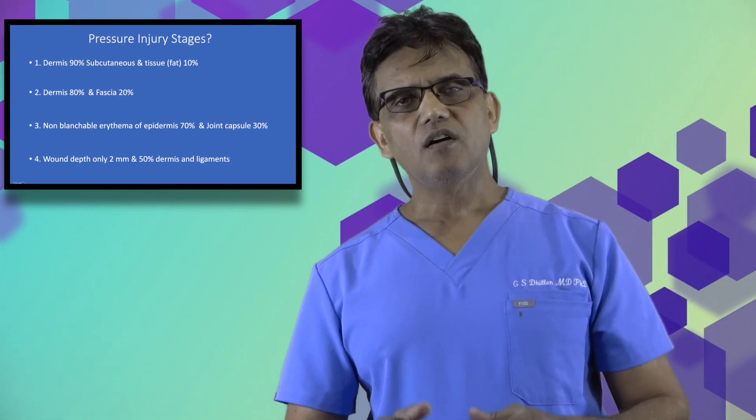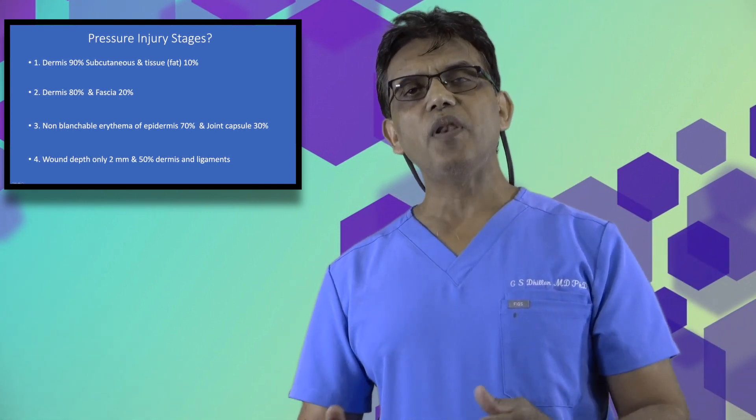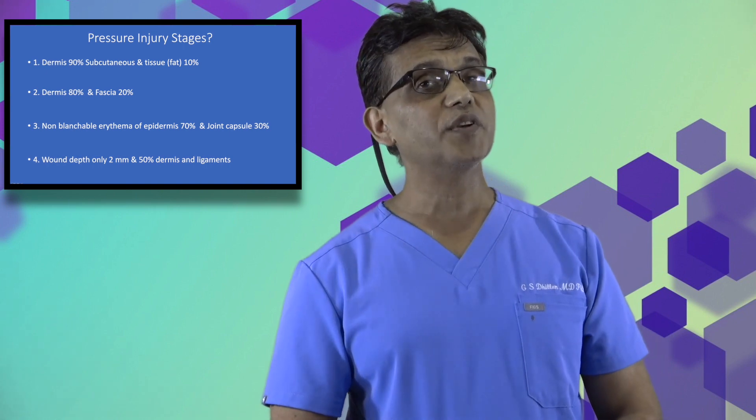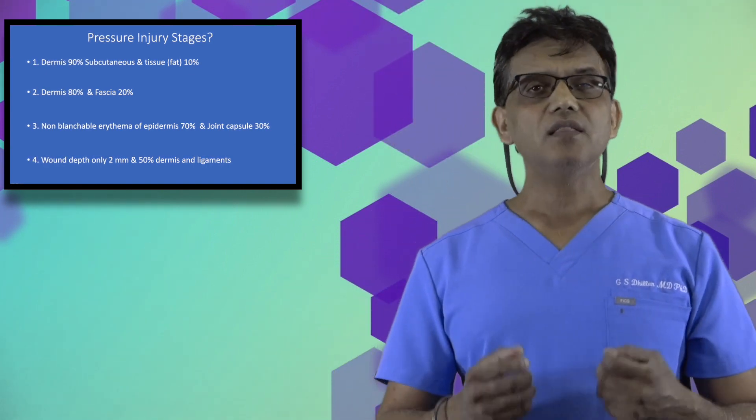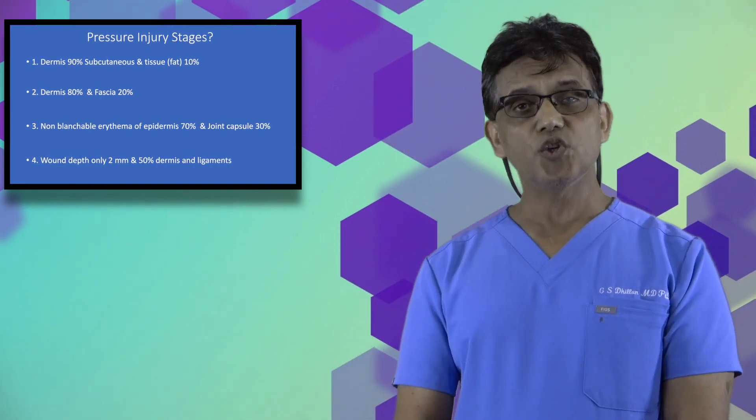For ulcer type 3, 70% of the exposed tissue is non-blanchable erythema of the epidermis and 30% is the joint capsule.